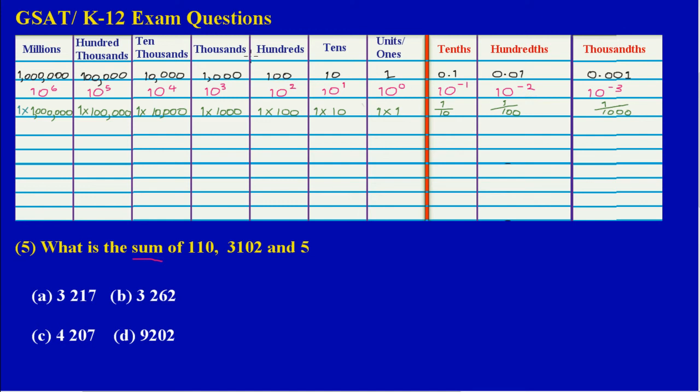In this lesson we'll be looking at some more GSAT past paper math questions. In this exam question, they're asking us what is the sum of 110, 3102, and 5.